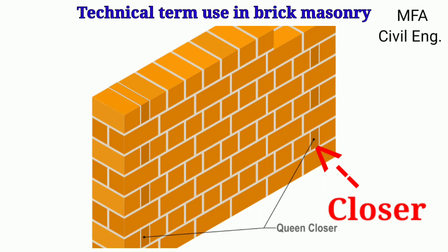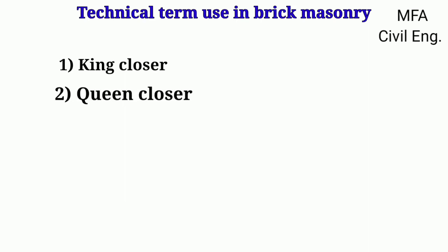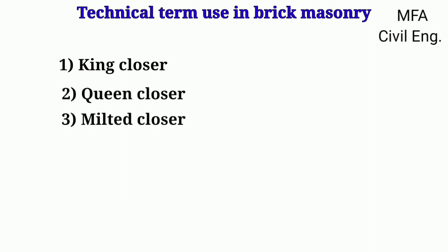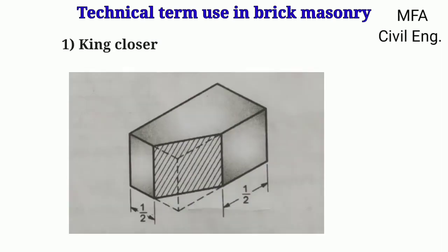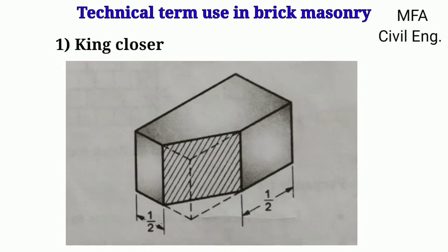These are king closure, queen closure, mitered closure, and bevel closure. King closure is obtained by cutting a piece of brick triangularly in shape between the center of the header and the stretcher.